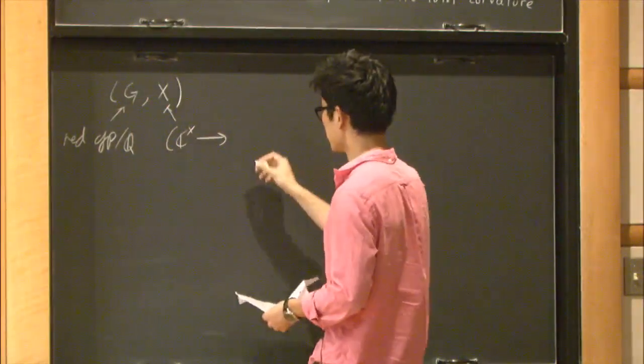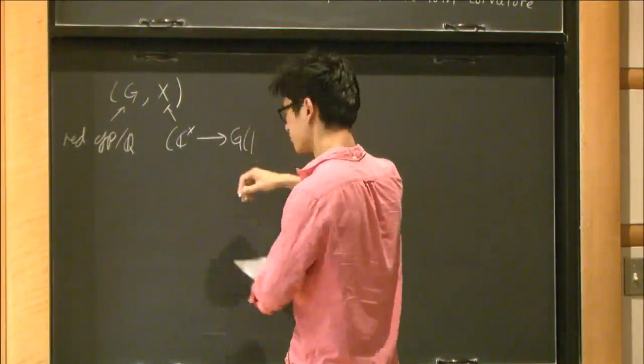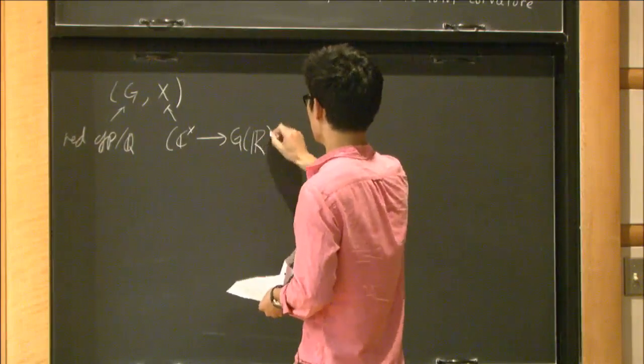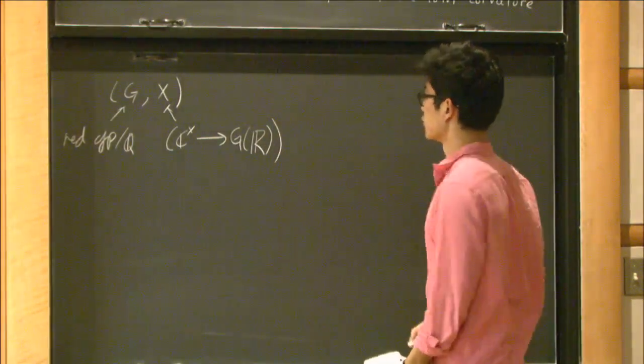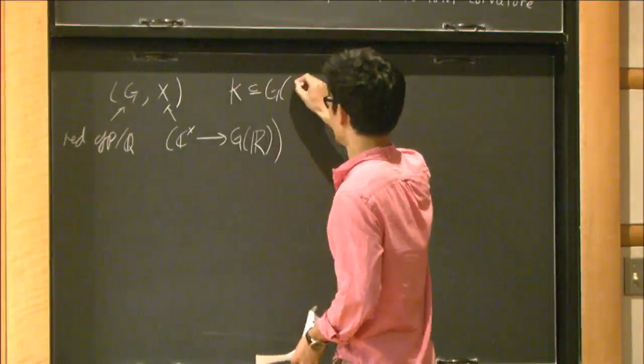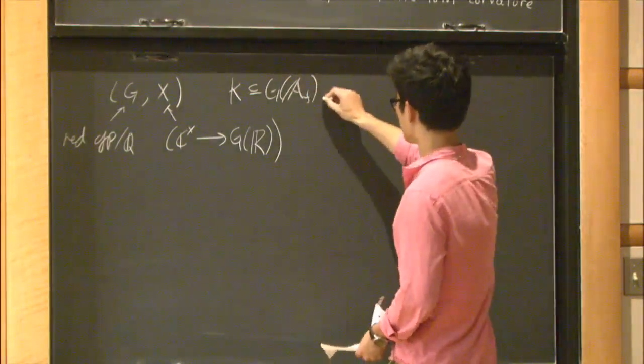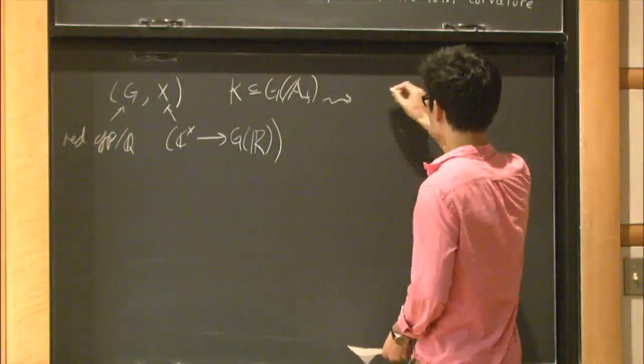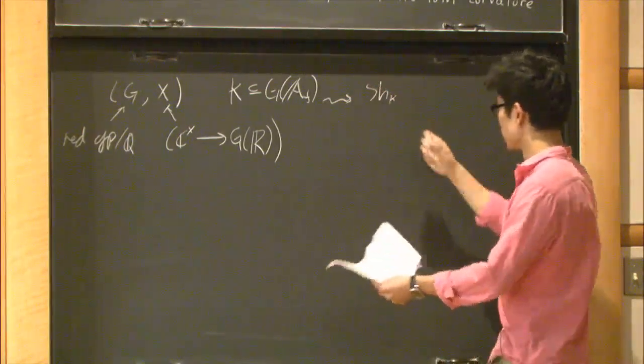and X will be like a conjugacy class of homomorphisms from C cross, the complex numbers without zero, into G of R, the R points of this reductive group, and suppose you also have a compact open K, in G of the finite adeles, then there's a formalism, Deligne's formalism associates something called a Shimura variety.